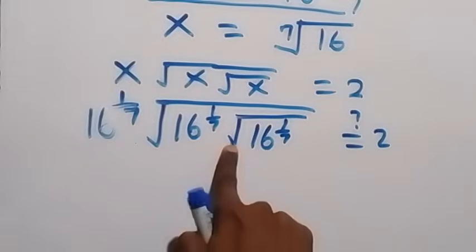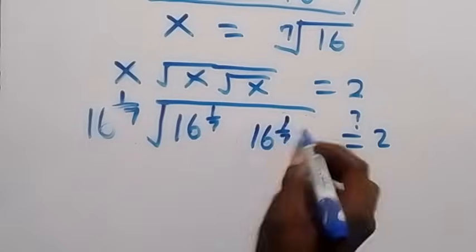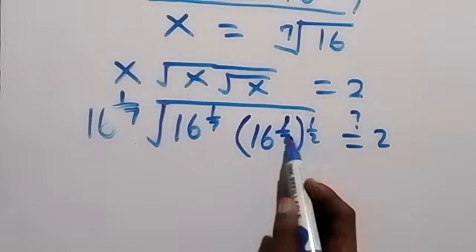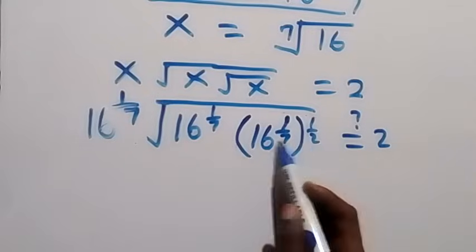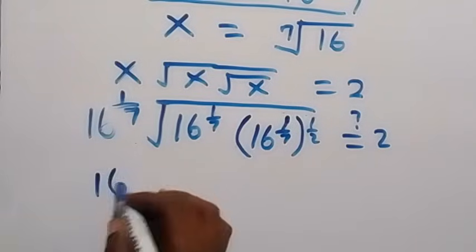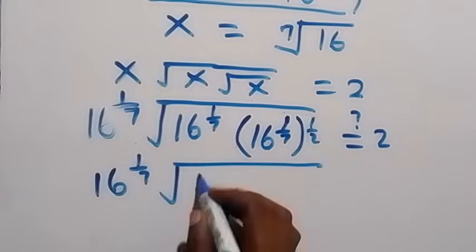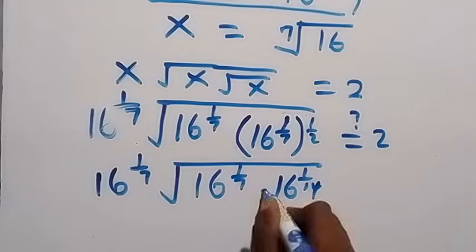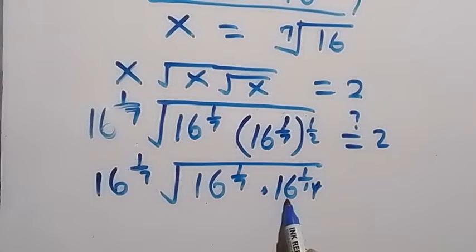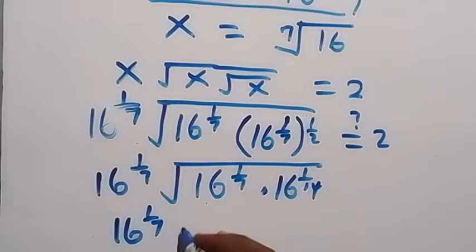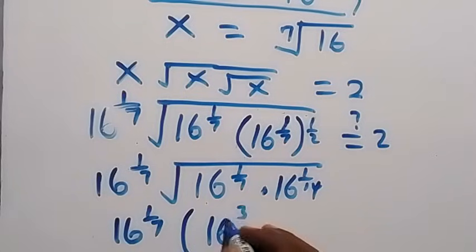Simplifying further: the square root can be written as raised to power 1 over 2, so that becomes 7 times 2 in the denominator giving power 1 over 14. We have 16 raised to power 1 over 7, then 16 raised to power 1 over 7 with square root giving 1 over 14. Combining powers using the law of indices gives us 3 over 14, so we have 16 raised to power 1 over 7 multiplied by 16 raised to power 3 over 14.